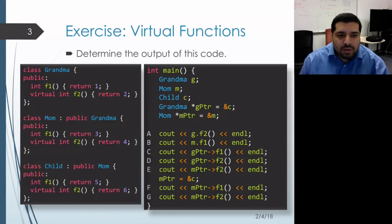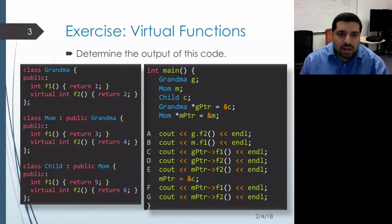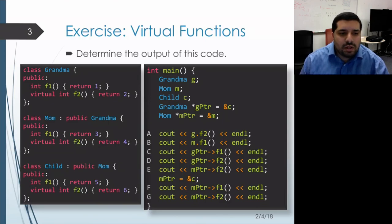For this piece of code, we'll determine what gets printed out when it's run. We're working with a class hierarchy here with some virtual and non-virtual functions. We'll be figuring out whether we get static versus dynamic binding when each of these virtual functions get called. I'll pause for a few seconds to give you a chance to pause the video and work on it on your own, and then we'll talk about it together.